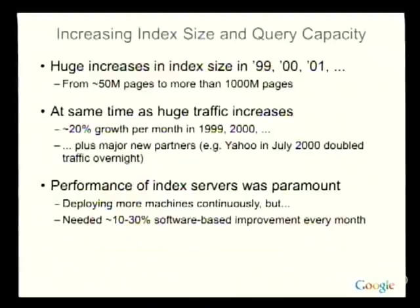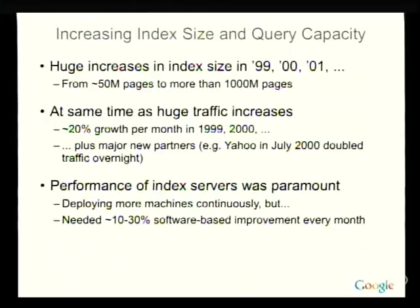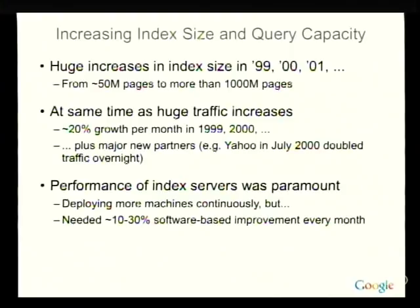In the period from 1999 to 2001, we were really growing two dimensions at the same time. The index grew by a factor of 20 or so over that period, and at the same time we were getting 15-20% traffic increases per month and signing big deals. We signed a deal with Yahoo to provide their search service in July 2000, and basically our traffic doubled overnight. We did a lot of work on performance of the index serving system — we were deploying more machines as fast as we could but also needed lots of software improvements, rolling out a new index with higher-performance server software.